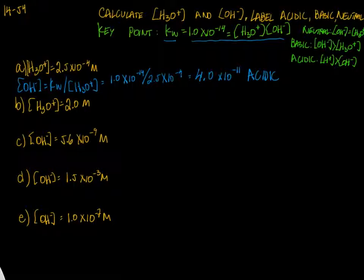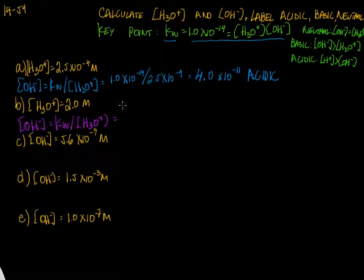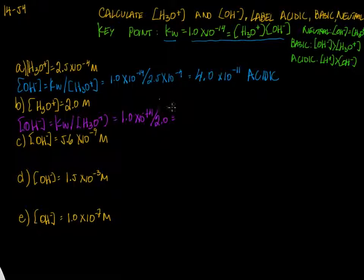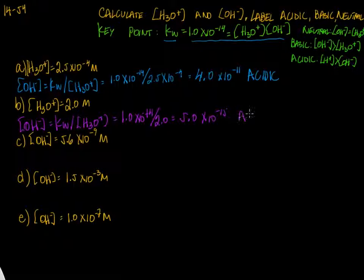In the second problem, [H3O+] = 2.0 M. Again we solve for hydroxide: [OH-] = Kw / [H3O+] = 1.0×10⁻¹⁴ / 2.0. The result is 5.0×10⁻¹⁵ — very low — so H3O+ concentration is much greater, and we label this solution as acidic.